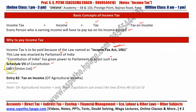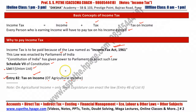If you see List 1, Entry Number 82 of this list says: Tax on Income other than Agriculture Income. This means the Parliament can enact the law to tax income except Agriculture Income. It means Agriculture Income cannot be taxed by the Parliament.